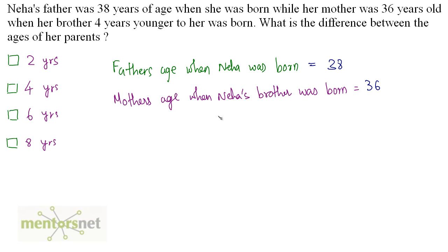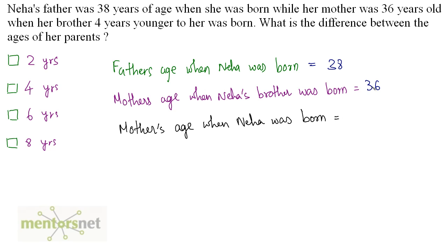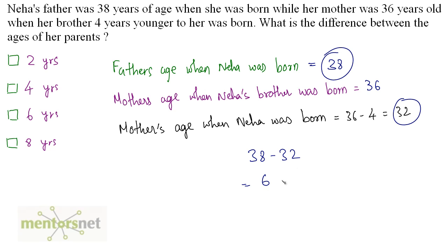Let's calculate the mother's age when Neha was born. Neha was born 4 years earlier than her brother, so her mother's age will be 4 years less — 36 minus 4 equals 32 years. The difference between the parents' ages is taken at the same point in time, when Neha was born: 38 minus 32 equals 6 years. So the difference between their ages is 6 years.